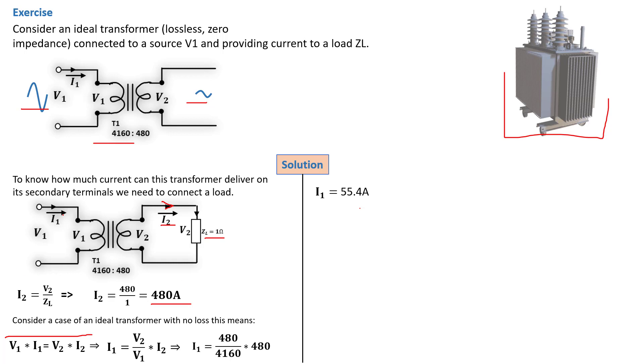This transformer is delivering 55.4 amps from its primary and we're getting 480 on the secondary. As the rule implies, VA in must equal VA out. On the primary we got higher voltage, the secondary got lower voltage. To maintain the principle of VA in equals VA out, the current on the secondary must go up because the voltage has gone down, and on the primary it's vice versa.